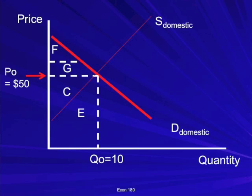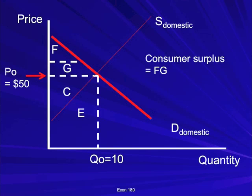Here's another example. We've got a price, a demand curve, and a bunch of labeled areas. In this instance, the consumer surplus is F plus G — that triangle. Total willingness to pay is F, G, C, E. What they had to pay was C, E. So consumer surplus is F plus G.